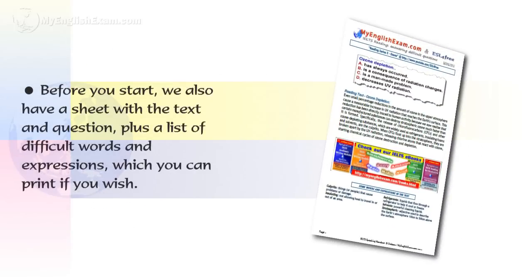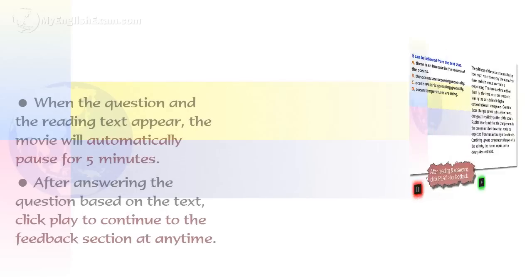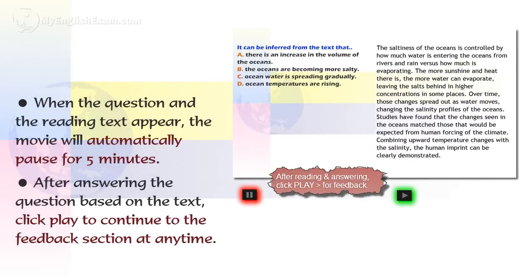Before you start, we also have a sheet with the text and question, plus a list of difficult words and expressions, which you can print if you wish. To download the sheet, click the link below the movie. When the question and the reading text appear, the movie will automatically pause for five minutes. After answering the question based on the text, click play to continue to the feedback section at any time.